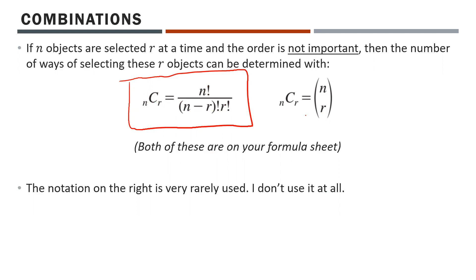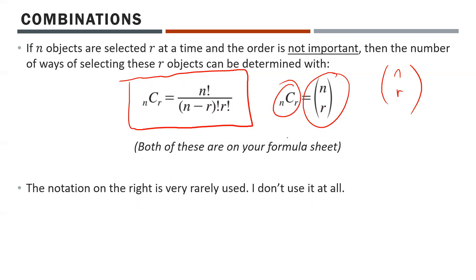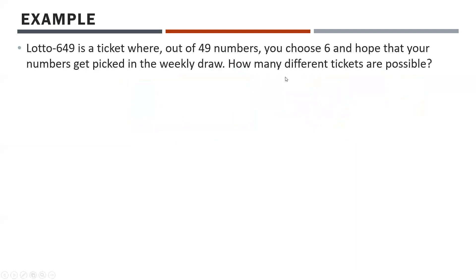What's notable about combinations is that in the past, instead of writing nCr, they would write it as a tall skinny set of brackets with the number of objects to choose from over the number being chosen. I never use that notation. It's rare, but it does appear on diploma exams, and it's on your formula sheet just in case. I think nCr is a vastly better way of writing it.